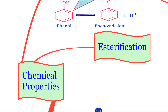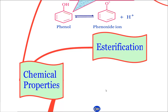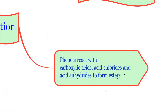The next type of reaction involving the cleavage of the O-H bond, after acidity, is the process of esterification. The process of obtaining an ester is called esterification. From phenol, by treating it with carboxylic acid, acid chlorides, or acid anhydrides, we will be able to obtain esters. These processes are collectively called esterification.